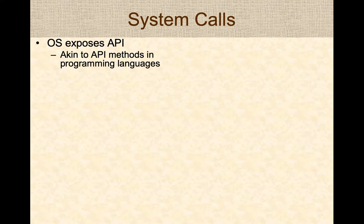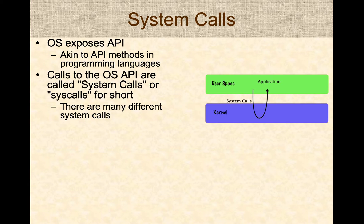This is where system calls come in. The operating system exposes an Application Programming Interface, or API. These APIs are synonymous to methods in programming languages — in programming languages we use APIs or method calls, and operating systems provide a similar approach for interacting with them. Calls to the operating system API are called system calls, or syscalls for short. Think of them as calls to another piece of software, except these are special calls, as we are interacting with the operating system.